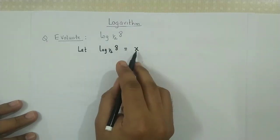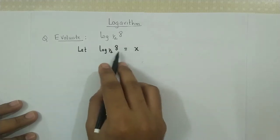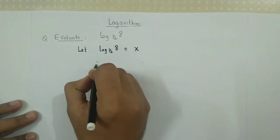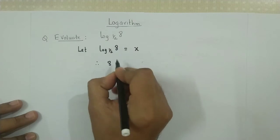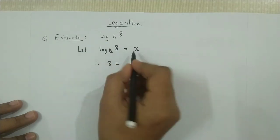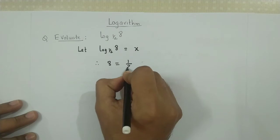Now we convert this logarithmic form into its corresponding exponential form. Therefore, we obtain 8 equals (½)^x, as the base gets transferred to the right-hand side.